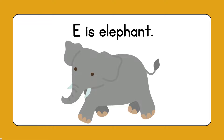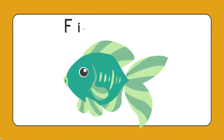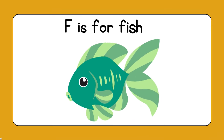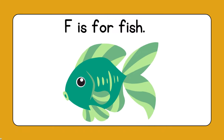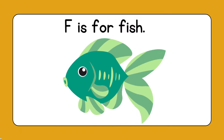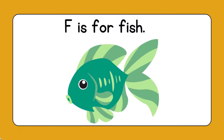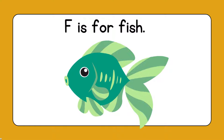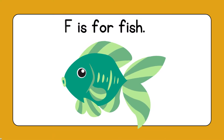E is for Elephant. E is for Elephant. F is for Fish. F is for Fish.